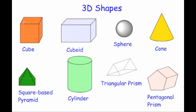And it's got 12 edges. Edges are the lines that join the vertices. So it's got four edges on the top, four vertical edges, and four edges along the bottom.